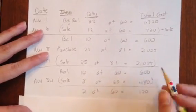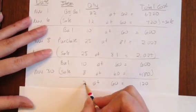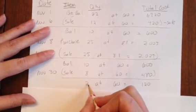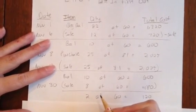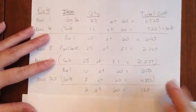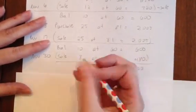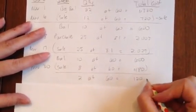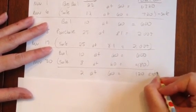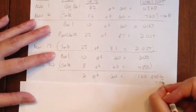Just like FIFO, it had a balance of 2. You're going to have the same ending quantity every time. What's going to change is your ending inventory amount and cost of goods sold. For November 30th, $120 is our ending inventory.